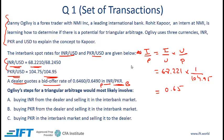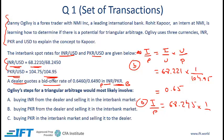For the offer: the INR to PKR offer equals the INR over USD offer, which is 68.245, multiplied by 1 over the bid — that is 1 over 104.75 — and when we do this calculation we get 0.6515.